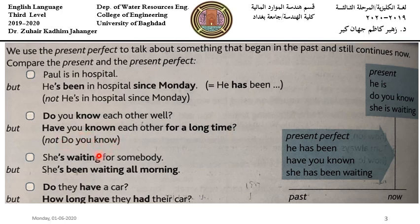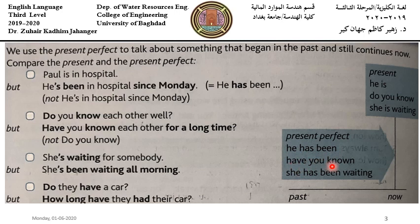She's waiting for somebody — present simple. But she's been waiting all morning — present perfect. Do they have a car? — present simple. How long have they had their car? — present perfect.